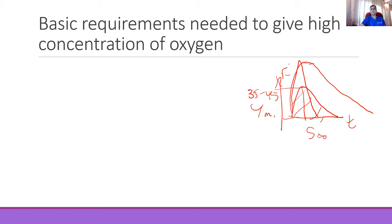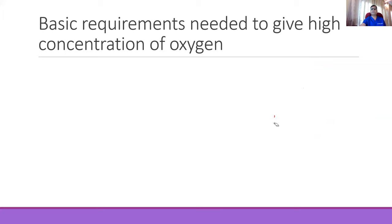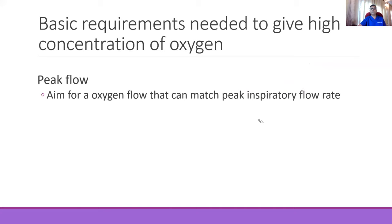Unless you provide oxygen at the peak inspiratory flow rate, you cannot deliver 100% oxygen. Because at peak inspiration, if you are breathing at 35 litres per minute and you provide only 10 litres, you cannot provide 100% oxygen — you are not meeting the peak inspiratory flow rate, unless you have a collection of oxygen in a separate reservoir bag. There are two main ways of meeting the oxygen target: one is to achieve the peak inspiratory flow rate, which is what high-flow nasal cannula does.